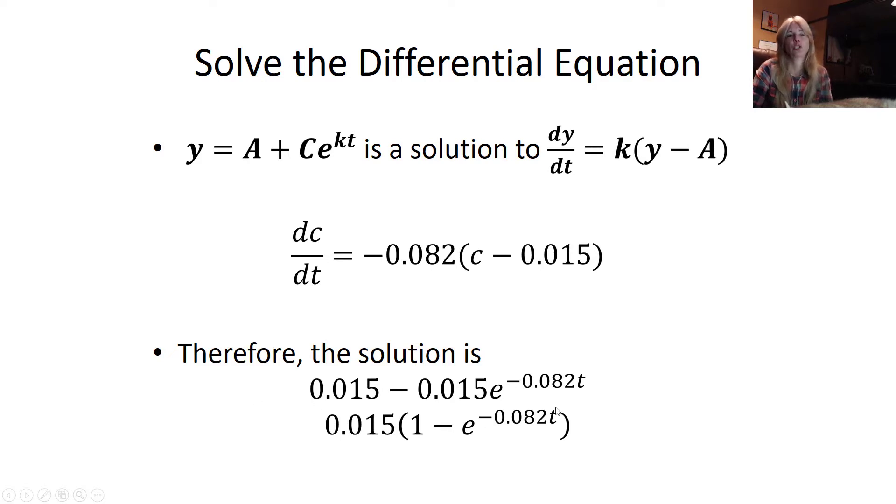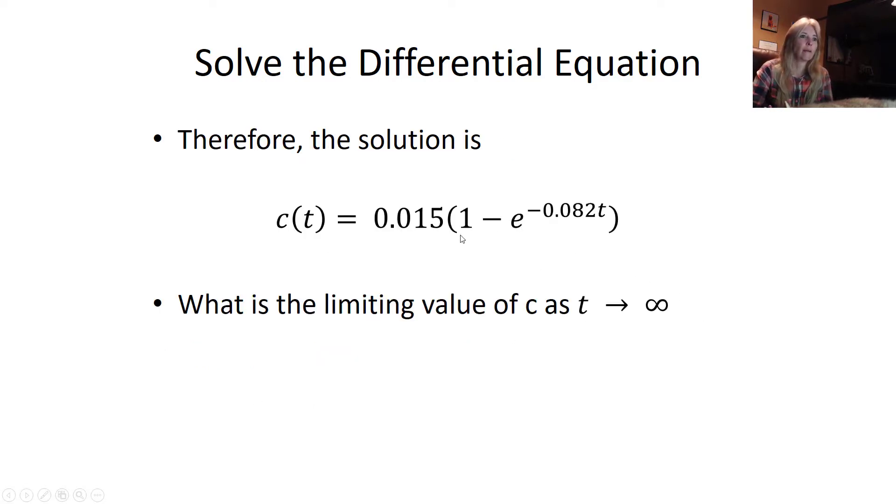Therefore this would be my actual solution, c(t) = 0.015(1 - e^(-0.082t)). Then I would say, what is happening in the long run? In the long run, e to the negative kt is heading towards zero, so this piece is going to zero. Far out in time, my limiting value would be 0.015 milligrams per milliliter. And that is all folks.